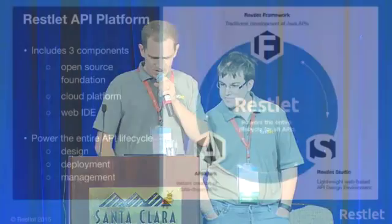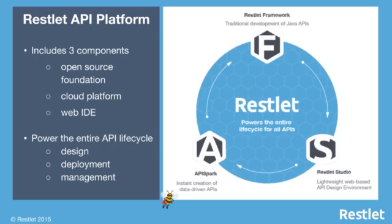A quick overview of the Restlet API platform — we'll then dive into the cloud part. It's composed of three components: the open source frameworks I mentioned; Restlet Studio, a web IDE to visually craft APIs and generate cloud SDKs and server skeletons; and finally a cloud platform called API Spark — platform as a service. This platform covers the full lifecycle of an API project, including design, deployment, and management.